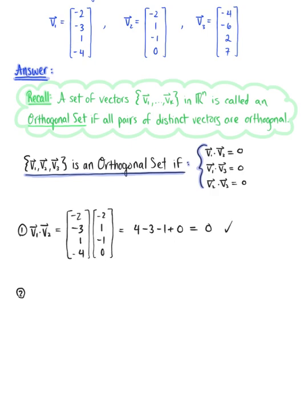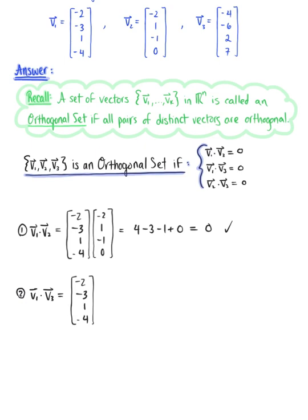Case number two, we are checking the dot product of vector v sub 1 with vector v sub 3. Vector v sub 1 is (−2, −3, 1, −4) and we are dotting this with vector v sub 3 with components (−4, −6, 2, 7). Computing this dot product, we get 8 + 18 + 2 − 28, which leaves us with 0.